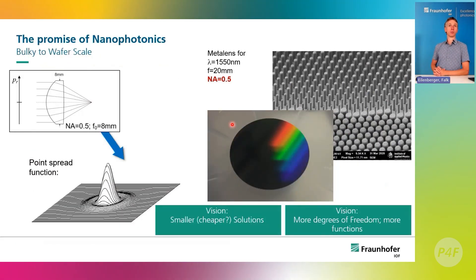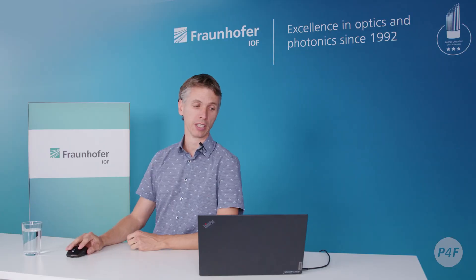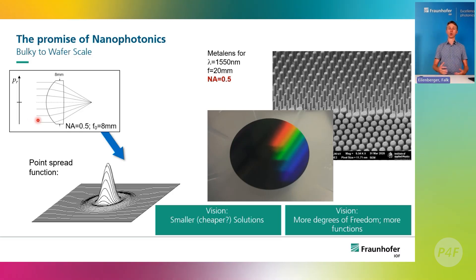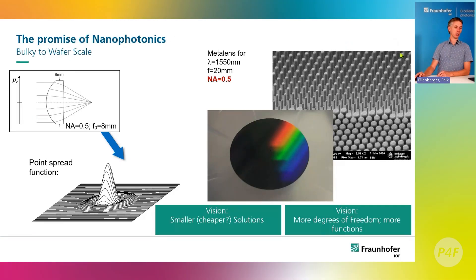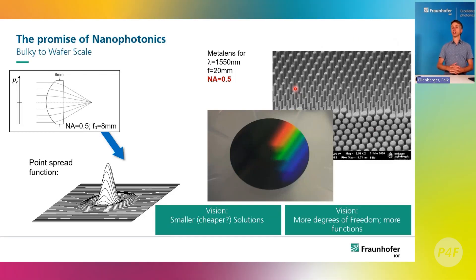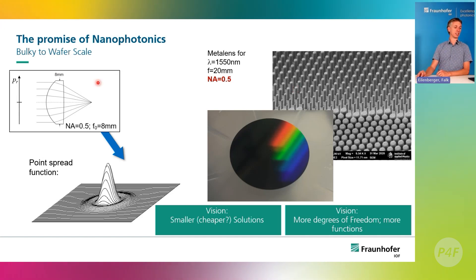How would that look in optics and photonics? You all know what classical optical systems look like. On the left hand side I have a sketch of an ordinary lens — it focuses light, no black magic involved. In nanophotonics, structures typically look like what's on the right hand side here: the interferometric equivalent of a lens, typically called a meta lens.